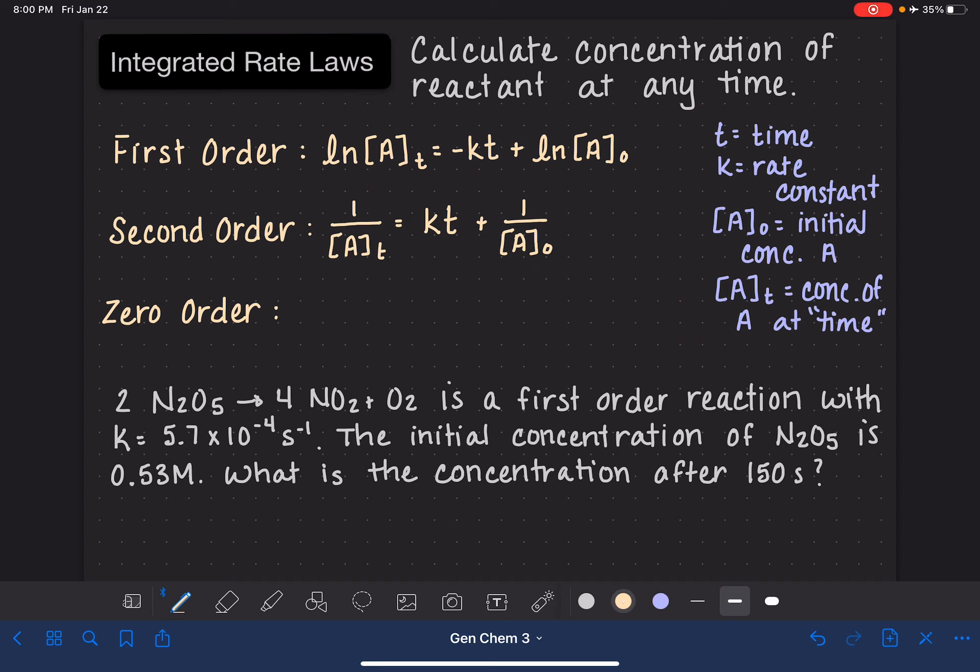And then last but not least, for a zero order reaction, the integrated rate law is A at time T is equal to negative sign again, negative KT, plus A at time 0.